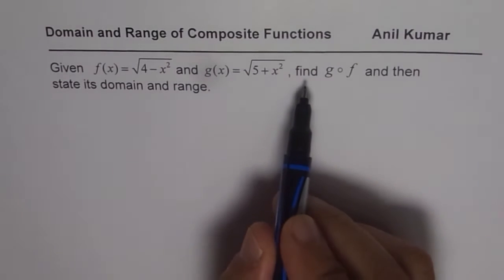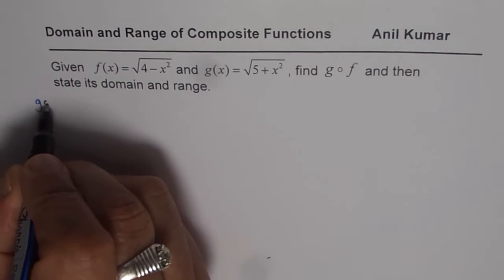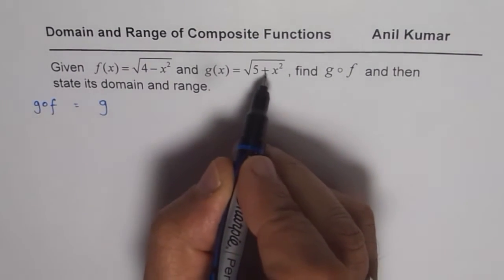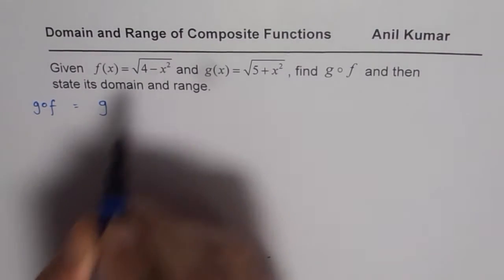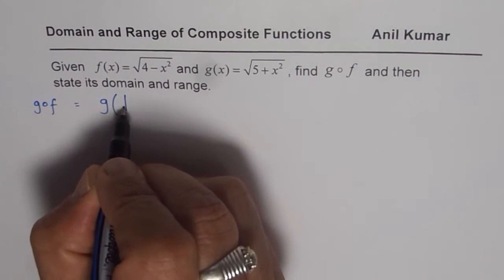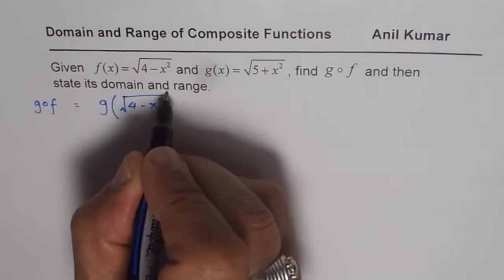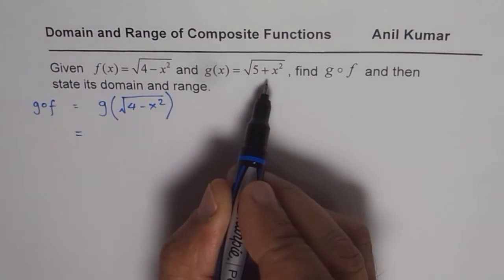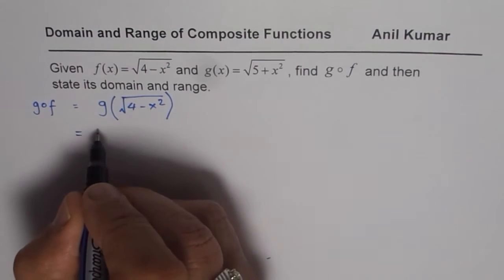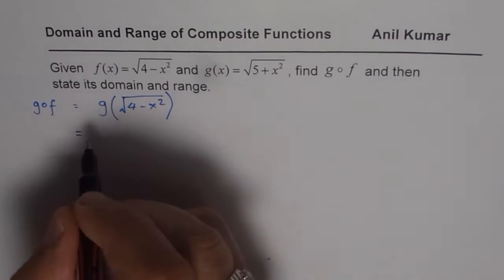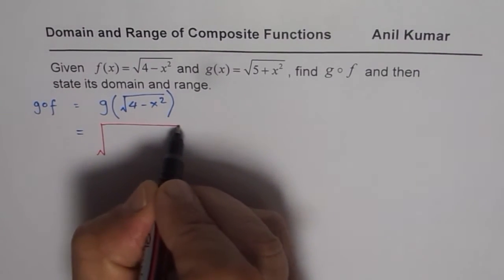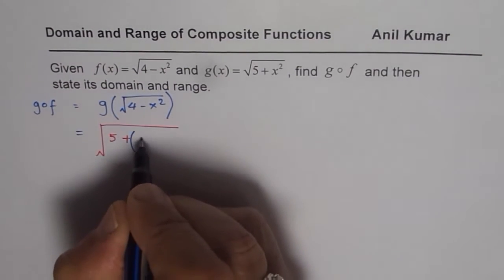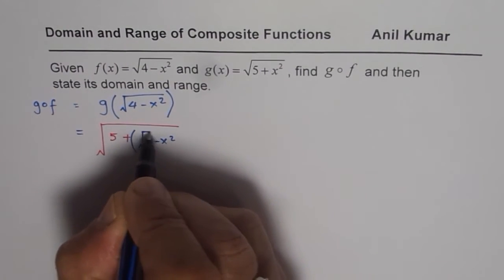Let's follow the steps and find g of f first. g of f means we want to find g, where g is the function √(5 + x²) and f is the function √(4 - x²). So g of f means we substitute √(4 - x²) into g, giving us √(5 + (√(4 - x²))²).